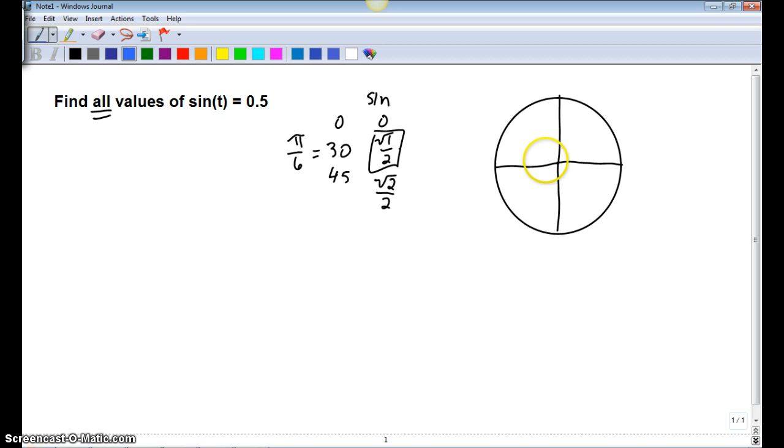The first time that our graph equals 0.5 is when we've gone thirty degrees or pi over six. What we can do is say that sine equals 0.5 at pi over six, but every time we go back around the circle another two pi, we're back to a reference angle of pi over six.